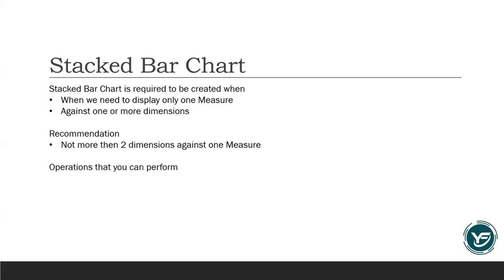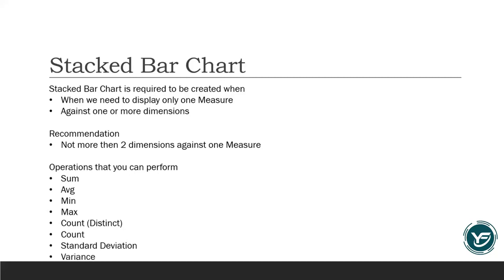Normal operations that you can actually perform on layers are basically sum, average, minimum, max, count, distinct count, standard deviation, and variance. These are a few operations you can play around with in your stacked bar chart, but there are more operations that you can also perform.